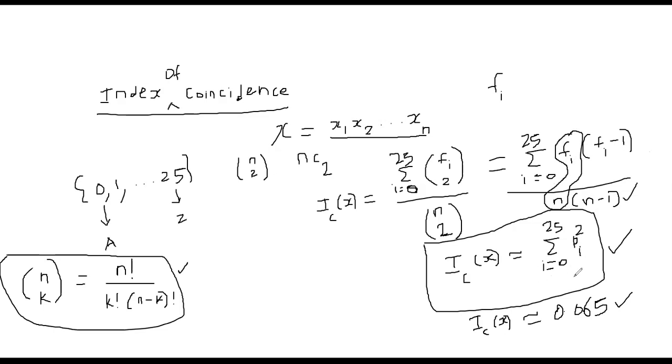we get p_i square. And if we instantiate this x for a regular English language text, it has been empirically validated that from large collection of texts people have studied it and it came to be close to 0.065. That's basically the definition of index of coincidence.